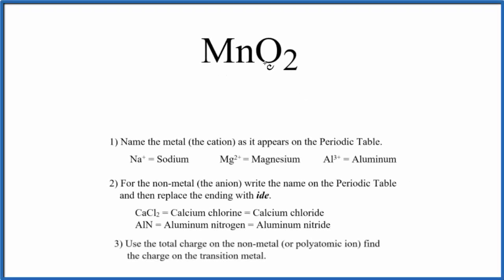To write the name for MnO2, we need to realize that we have a metal and a nonmetal. And because of that, we're going to treat this as an ionic compound.